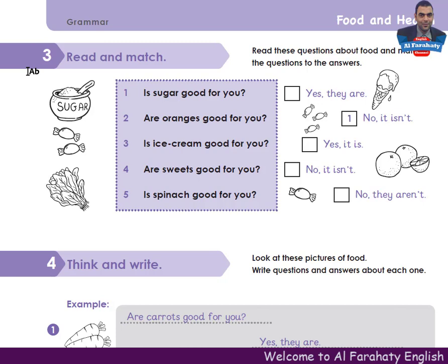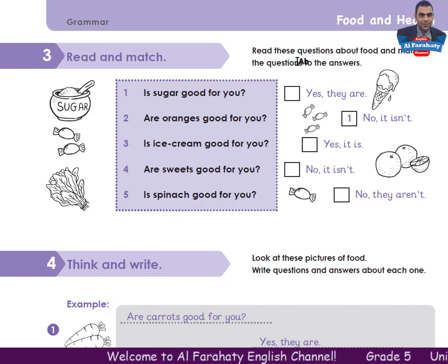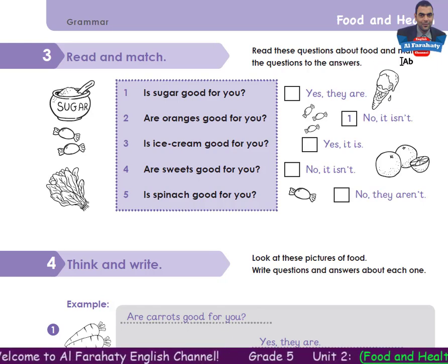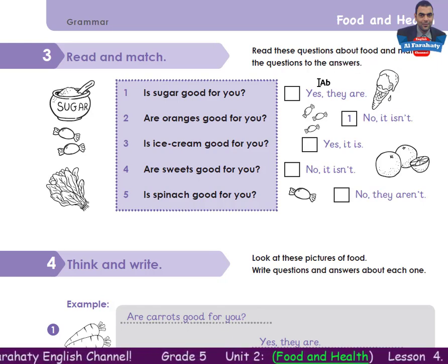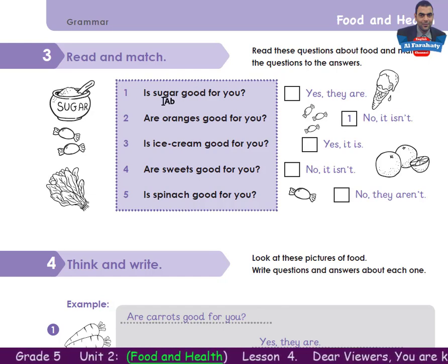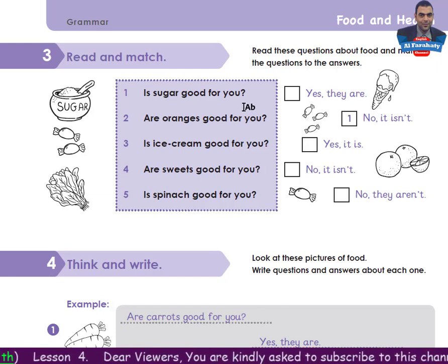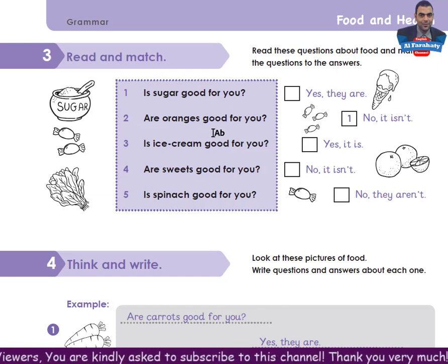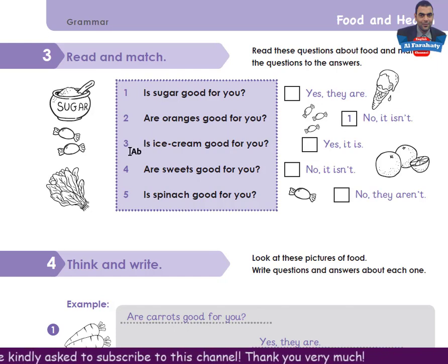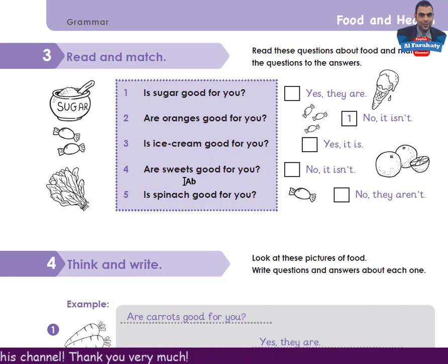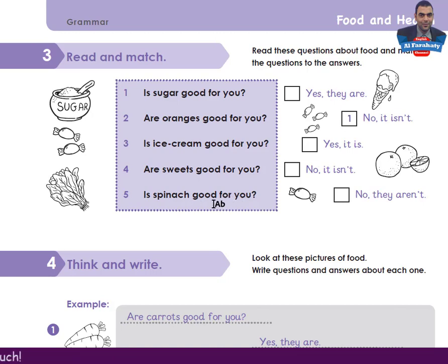Let's go to page 15 of your skills book. Activity 3, Read and Match. Read these questions about food and match the questions to the answers. Number 1: Is sugar good for you? Number 2: Are oranges good for you? Number 3: Is ice cream good for you? Number 4: Are sweets good for you?